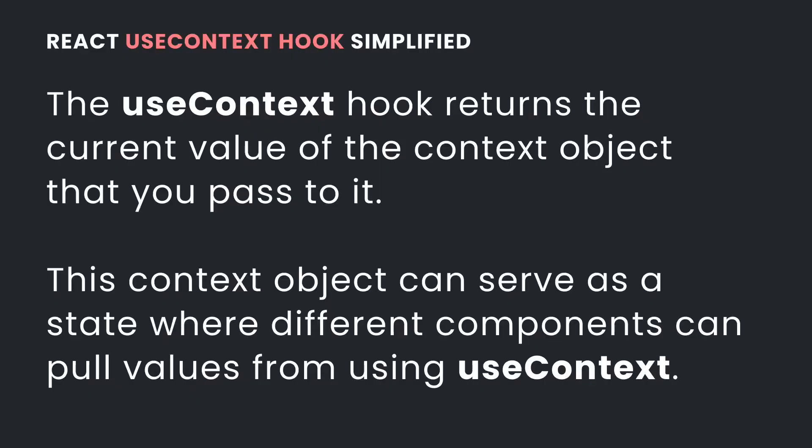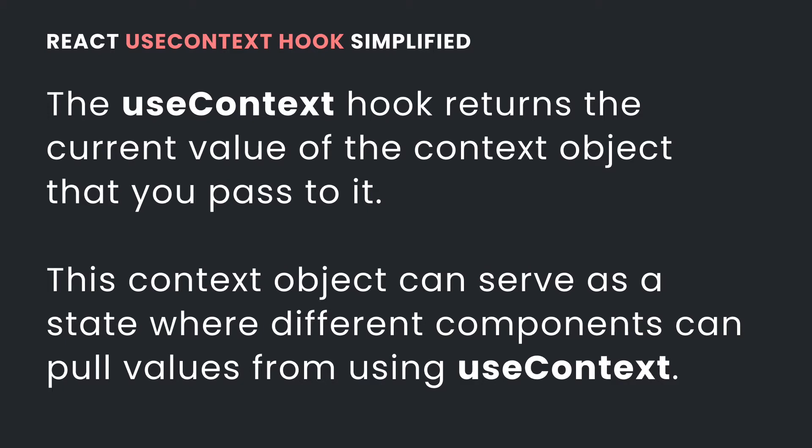The useContext hook returns the current value for the context object that you pass to the hook. This context object provides state data that you want to share across different components. So from any component, you can use the useContext hook, pass the context object, and then that component would have access to the current state in your application.